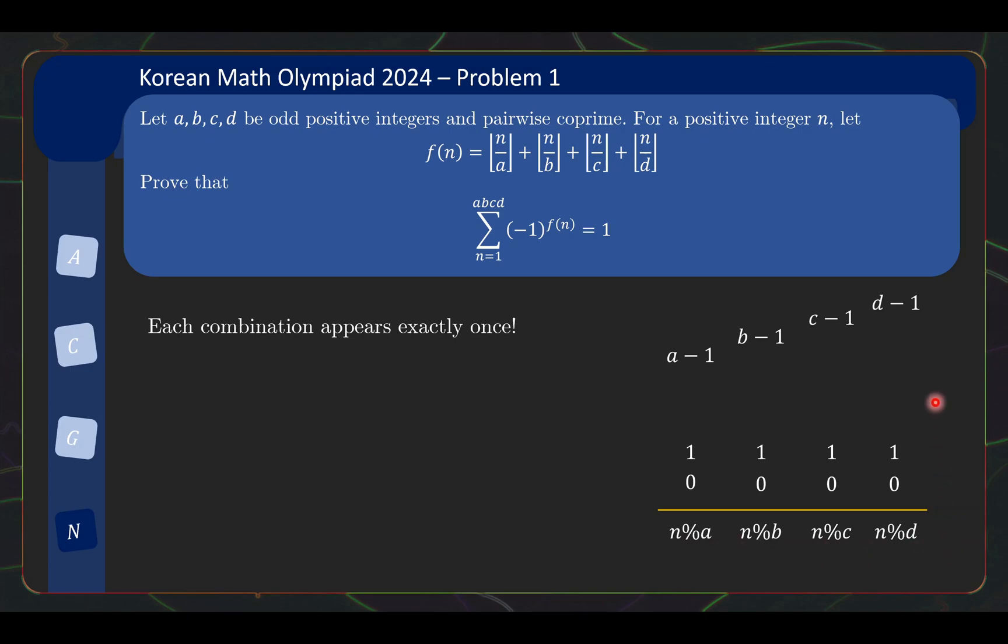Yeah, so a, b, c, d are coprime, so you can apply the Chinese remainder theorem to basically say that each selection is going to be covered exactly once when you vary from n equals 1 to abcd. So basically, now we need to show that what I need to show is that when you look at all possible a, b, c, d combinations, there's one more even sum than odd sum. Okay, and now it's actually quite straightforward, because we can find a rather easy way to pair terms up.